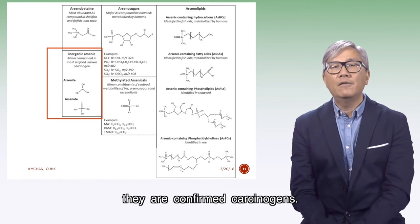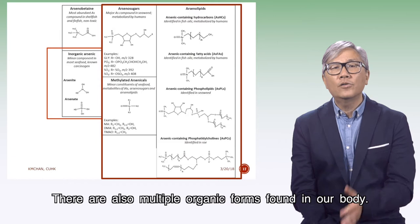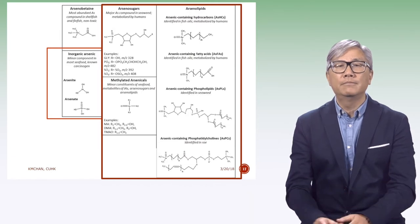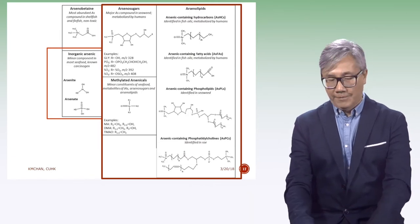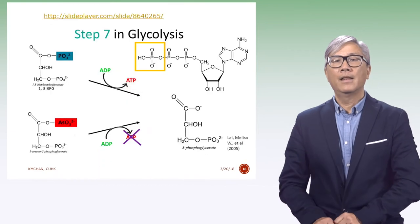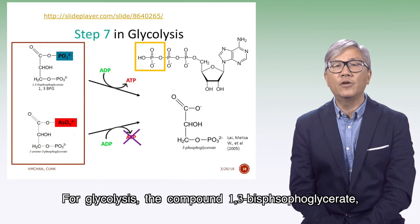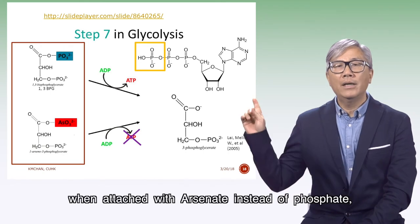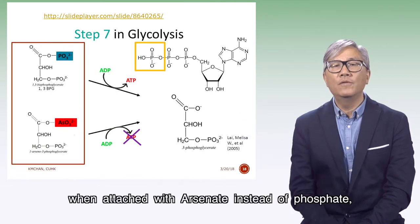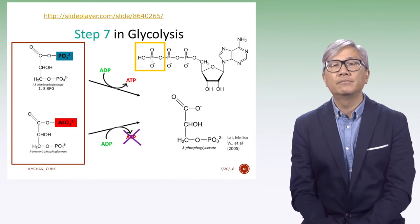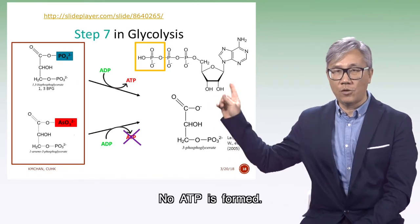The inorganic forms are confirmed carcinogens. There are also multiple organic forms formed in our body. For glycolysis, the compound 1,3-bisphosphoglycerate, when attached with arsenate instead of phosphate, results in low ATP being formed — an uncoupling effect of AsO4 where no ATP is produced.